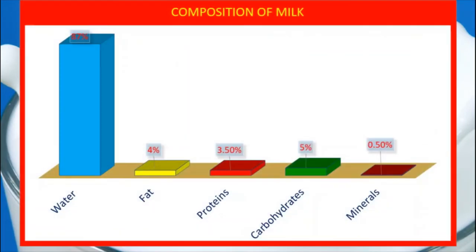If we talk about more detailed composition of milk, it contains 87% water, 4% fat, 3.5% proteins, 5% carbohydrates, and less than a percent minerals, vitamins and other such micronutrients. This composition may change according to the type of animal, the feed they are getting and the age of the animal.